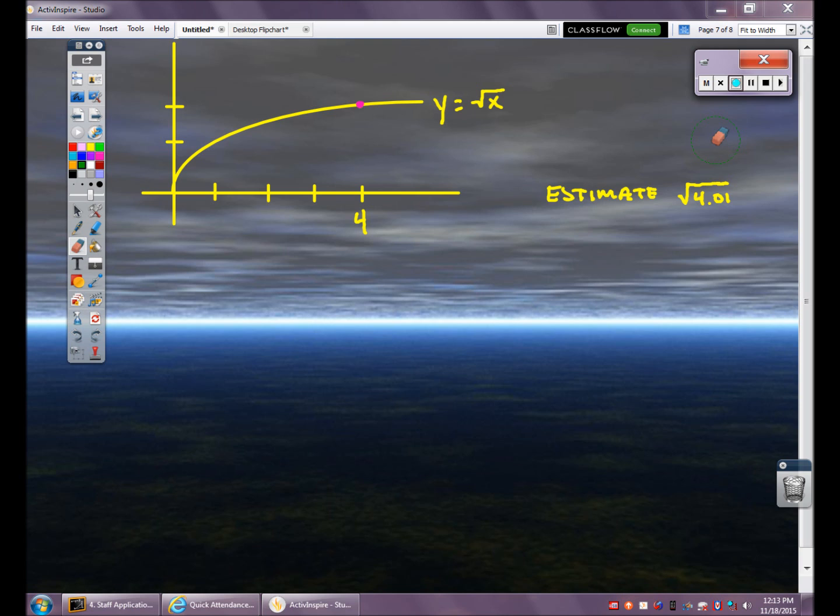That curve, y equals root x, is actually made up of a bunch of straight lines. If I were able to zoom in at the point 4,2, where that pink dot is, I would see that that's actually a straight line. Well, I can use that straight line to try to estimate the square root of 4.01. So let me show you how I'm going to do that.